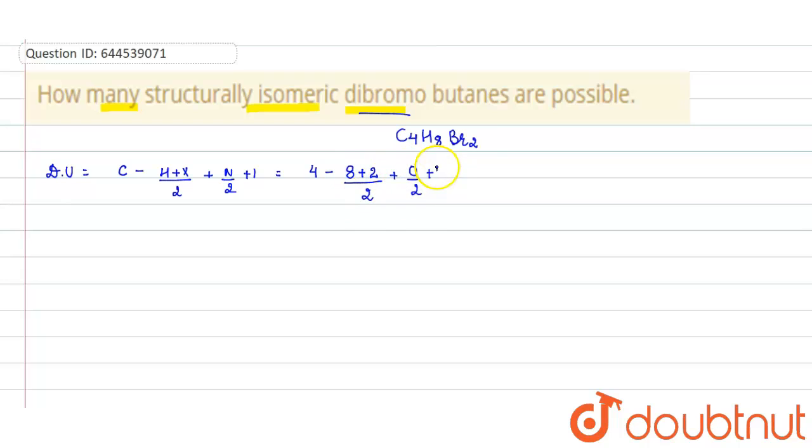are 0, plus 1. So when you solve this, you will get (4 - 10)/2 + 1, that will equal 0. Okay, so here this double bond equivalent or degree of unsaturation value is zero. This